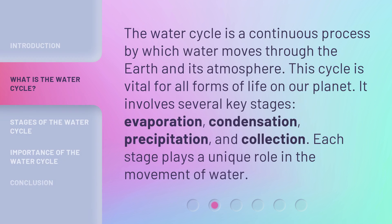The Water Cycle is a continuous process by which water moves through the Earth and its atmosphere. This cycle is vital for all forms of life on our planet. It involves several key stages: evaporation, condensation, precipitation, and collection. Each stage plays a unique role in the movement of water.